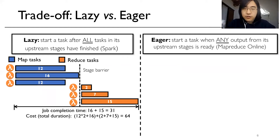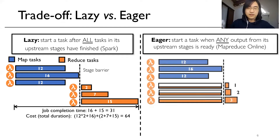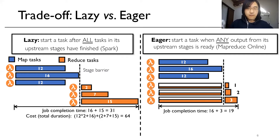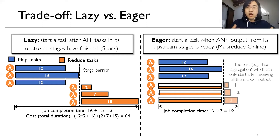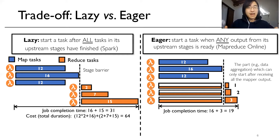On the other extreme, we can also choose to launch tasks in an eager manner, which means we start a task as soon as any output from its upstream stages is ready. Frameworks such as MapReduce Online can work in this manner. By doing so, we can effectively overlap part of the Reduce execution with the Map stage, which reduces completion time to 19. However, the Reduce execution depends on mapper output, and parts of the Reduce execution — for example, data aggregation — can only start after receiving all mapper output. As a result, some reducers may always be running at very low load since they are busy waiting for input data, which wastes CPU resources and introduces a much higher cost.